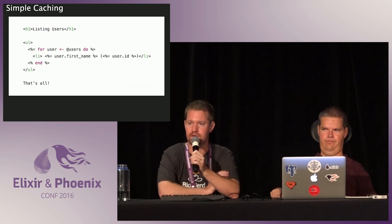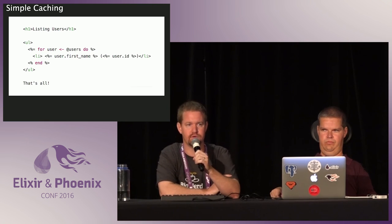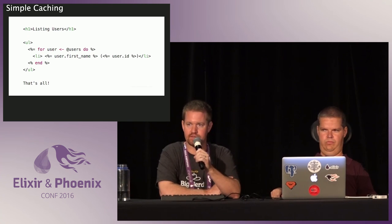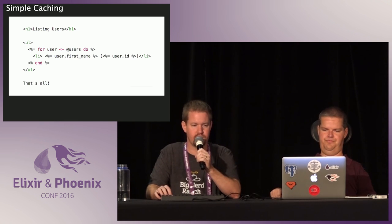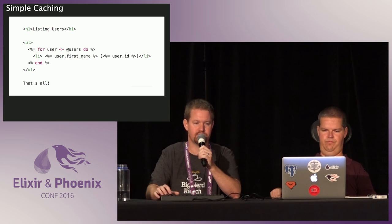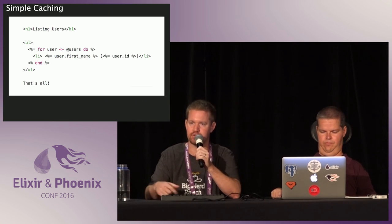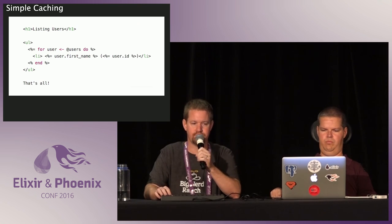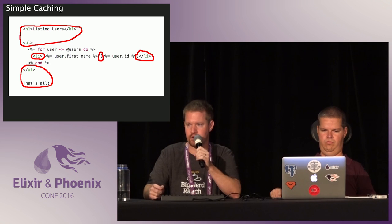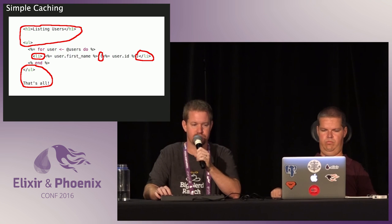If you are using Phoenix and EEx, or Haml with the Calliope library, you're going to get to take advantage of this. In a template, you can see static pieces like the page heading — that's going to be the same on every request — and dynamic things like where you're iterating through people's names. All those static things are not changing, so it would be nice if we didn't have to keep building those strings.